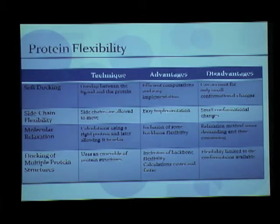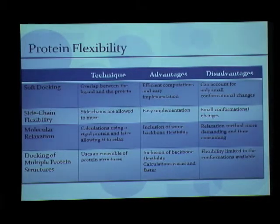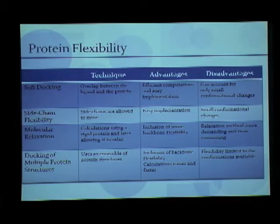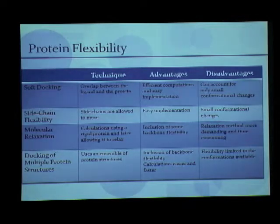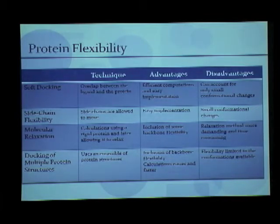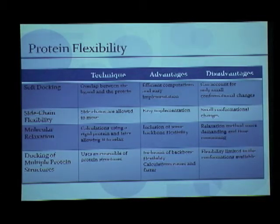People then came up with another method called molecular relaxation, where a ligand and a protein are both considered rigid first, allowed to dock, and after that the binding pocket is allowed to move so that there is some relaxation. This method has backbone flexibility included, but the problem is that it demands a lot of computational power. After this, people started using multiple protein structures, where they use an ensemble of protein structures to include many different conformations of the protein. Backbone flexibility is included and calculations are easier and faster.